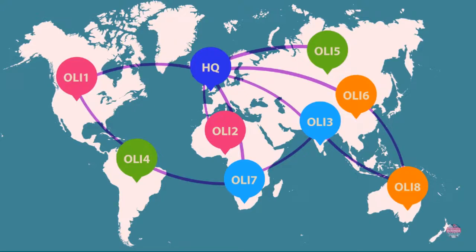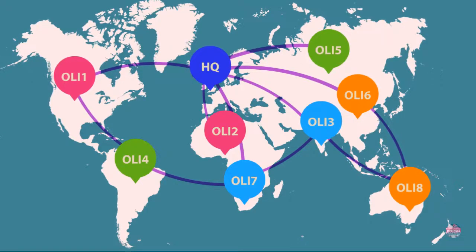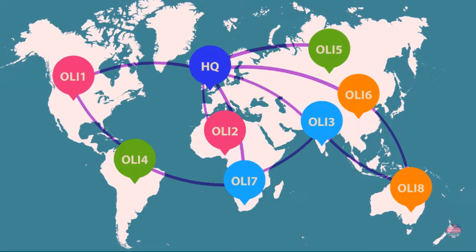What is important to remember is that although OLI 6 and OLI 8 may have a similar market-seeking motive — meaning that our company invested in those two locations for market-seeking purposes — those two investments are still very different and unique, because the combination of the OLI advantages for each of those investments is unique.